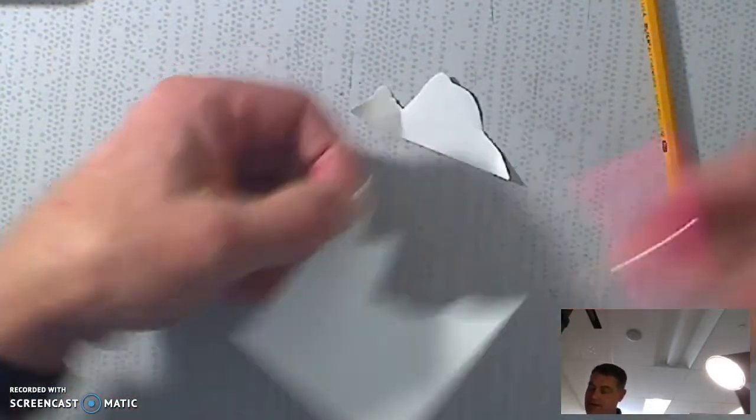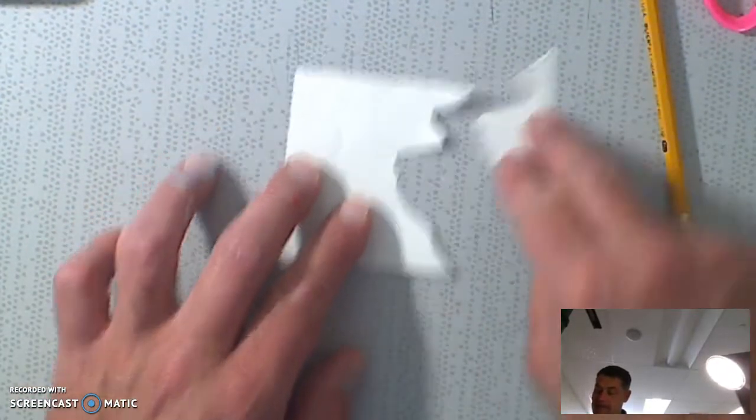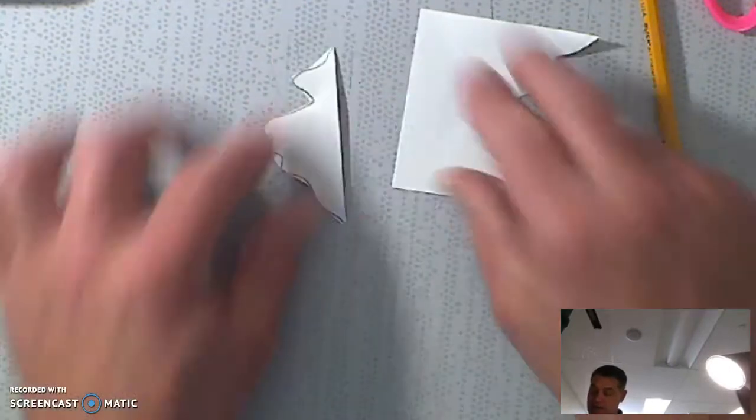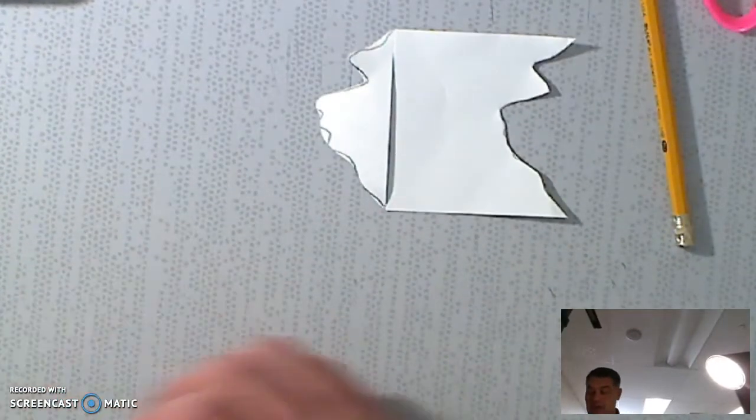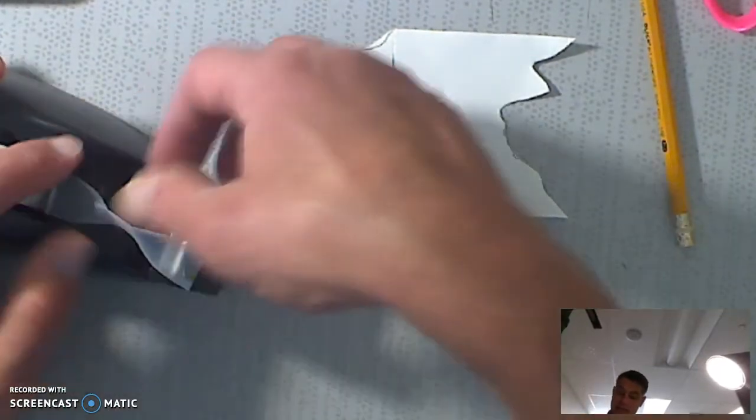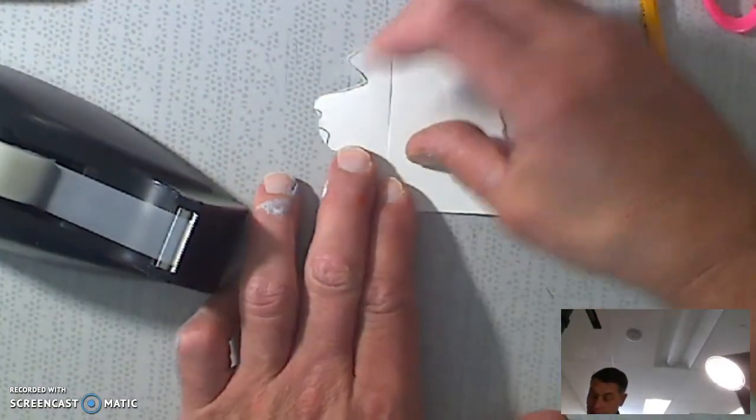So now here's this piece that I just cut out from this side. I'm going to take it over to the other side of the paper and put it right there. Then I'm going to take a piece of tape and tape it on right there.